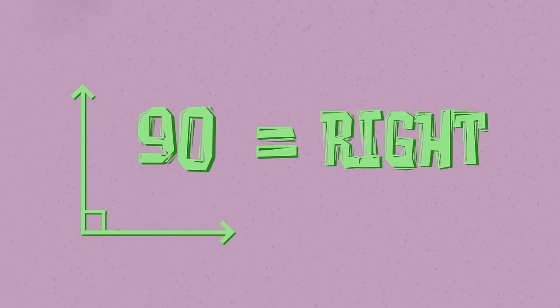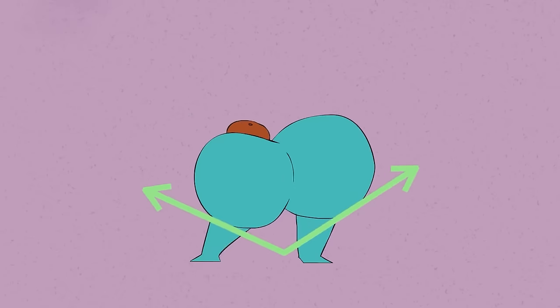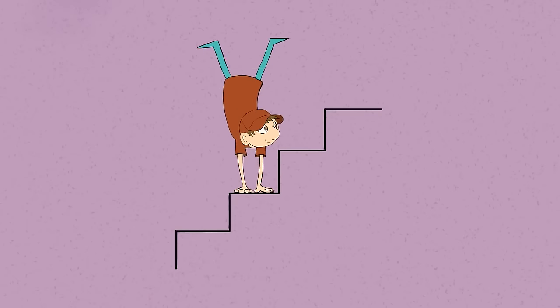When an angle measures 90, we call it right. You can tell this angle just by sight. It looks like a corner. You're looking at them when you're walking up the stairs.